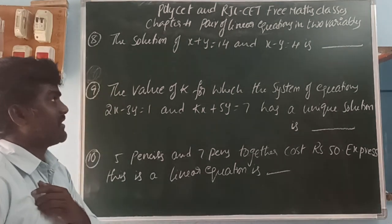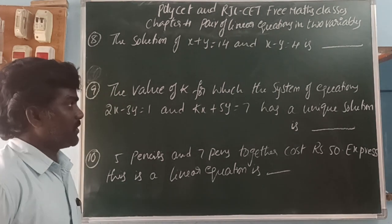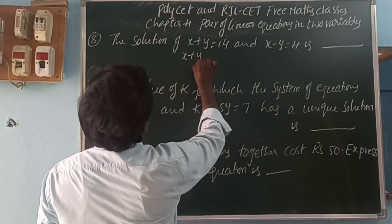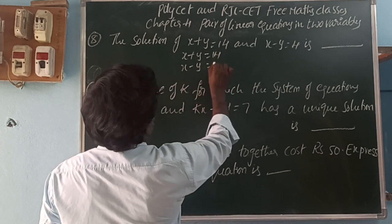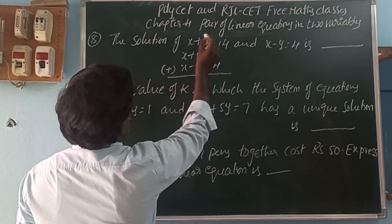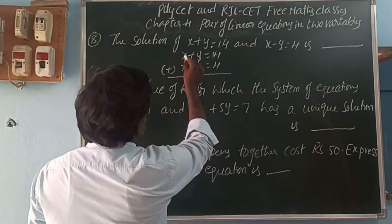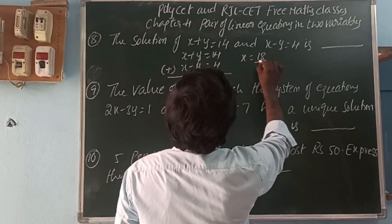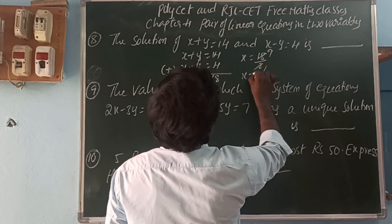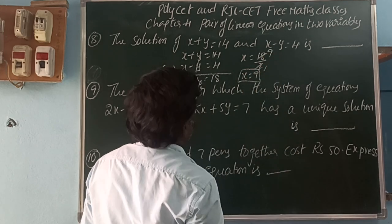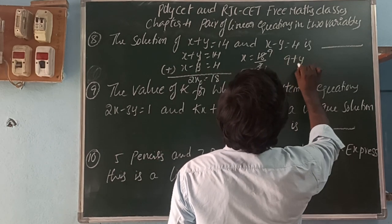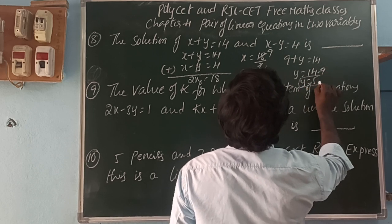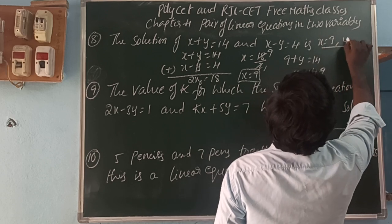Next, find the solution of x plus y equals 14 and x minus y equals 4. Adding the two equations: plus y and minus y cancel. So x plus x gives 2x and 14 plus 4 gives 18. Therefore x equals 18 by 2, so x equals 9. Substituting x equals 9 into the first equation: 9 plus y equals 14, so y equals 14 minus 9, giving y equals 5. So x equals 9 and y equals 5.